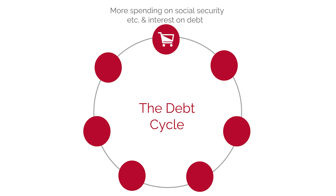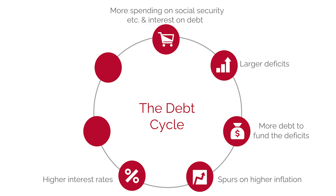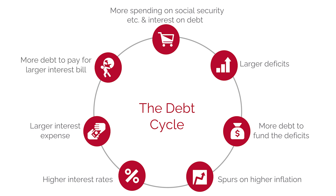This brings us to what I'd call the debt cycle. The U.S. government is spending more on social security, income security, defense, and now interest, which leads to larger deficits. Larger deficits need to be funded by more debt. All else being equal, more debt equals more inflation as more money gets pumped into the system. Higher inflation causes the Federal Reserve to hike interest rates. High interest rates on debt equals larger interest expense, and because the U.S. doesn't have money to pay that interest expense, they raise more debt — which feeds back into larger deficits. And so it goes on. The U.S. is in a very difficult place and is effectively trapped.